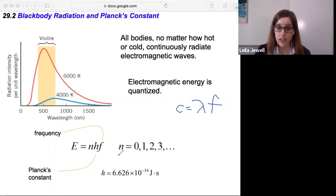Planck's constant is something that you're not expected to know. It's given to you on exams, but 6.626 times 10 to the negative 34 joule seconds. So it's very, very tiny.